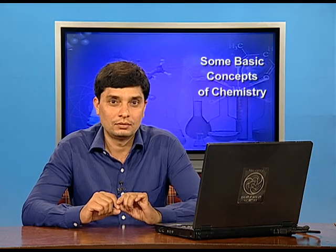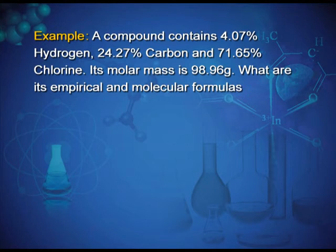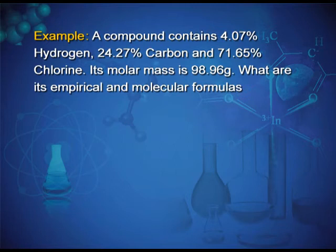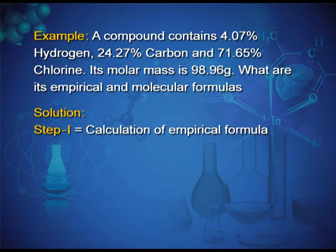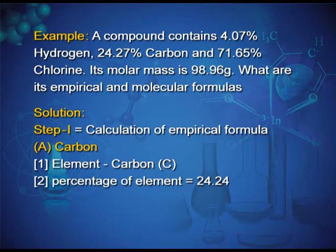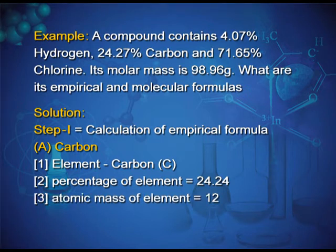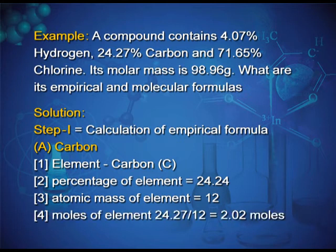Example: a compound contains 4.07% hydrogen, 24.27% carbon, and 71.65% chlorine, with a molar mass of 98.96 g. Step 1 — calculate moles of each element: Carbon: 24.24 ÷ 12 = 2.02 moles. Hydrogen: 4.07 ÷ 1 = 4.07 moles. Chlorine: 71.65 ÷ 35.5 = 2.02 moles.